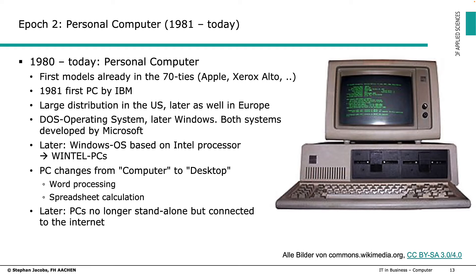Here an interesting point: IBM decided to let Microsoft build the operating system. Up to this point, the rule was to get everything from one hand — if you buy IBM hardware, you get IBM software and OS too. This changed because of a misjudgment by IBM: they argued that real computers are mainframes and that the PC is just a niche toy product. So they asked another company — Microsoft — which stepped in and developed DOS, the disk operating system.